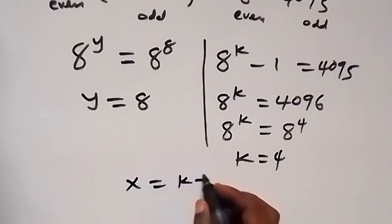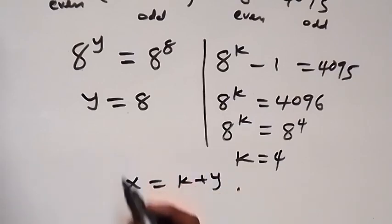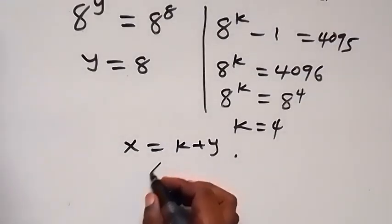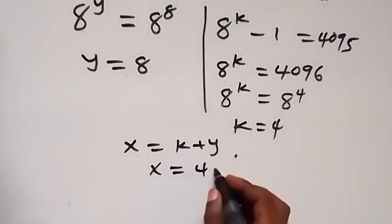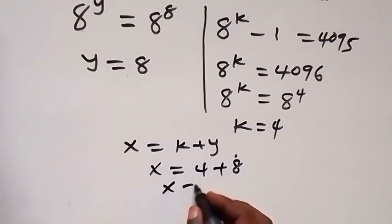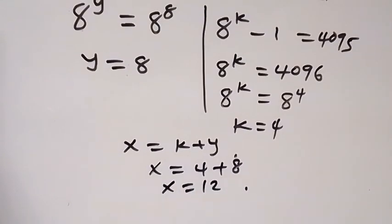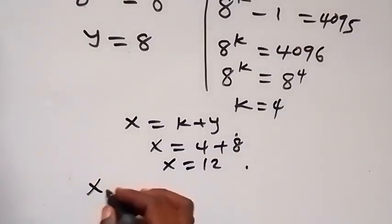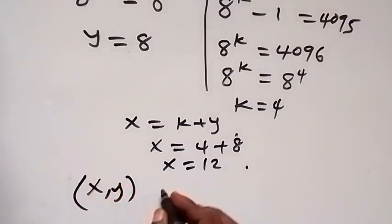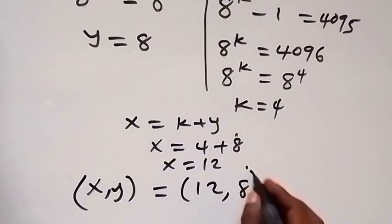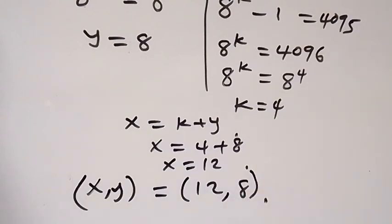Since x equals k plus y, and we have found y equals 8 and k equals 4, we can say that x equals 4 plus 8, so x equals 12. The solution to this problem is therefore (x, y) = (12, 8).